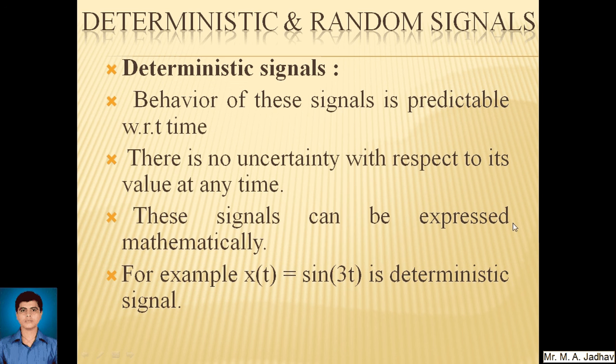Deterministic and random signals. Firstly, deterministic signals. Behavior of these signals is predictable with respect to time. There is no uncertainty with respect to its value at any time. These signals can be expressed mathematically. For example, x of t equals sin 3t is a deterministic signal.